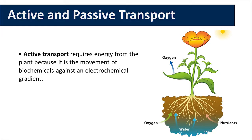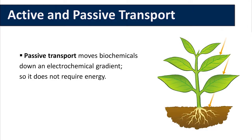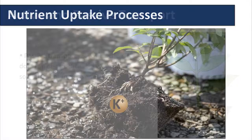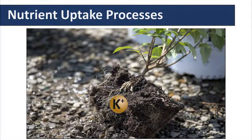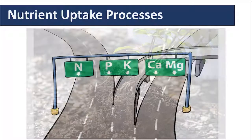Active transport requires energy from the plant because it is the movement of biochemicals against an electrochemical gradient. Passive transport moves biochemicals down an electrochemical gradient, so it does not require energy. Nutrient uptake is an active process — a plant has to spend energy to take up nutrients.